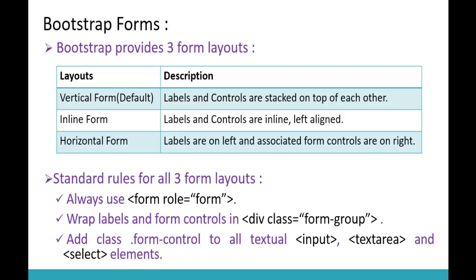Here is the description for horizontal form: the labels will be on the left side and the associated form controls will be on the right side. When we code in Visual Studio, we'll understand the horizontal form layout completely. Before working with the horizontal form, we have to follow the rules of the form layouts, as we did in the earlier session.